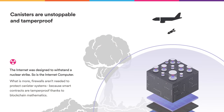What this means is that you can create dApps that scale. For example, you might create a tokenized social media service. Canisters are unstoppable and tamper-proof. The Internet was designed to withstand a nuclear strike, and so is the Internet Computer.